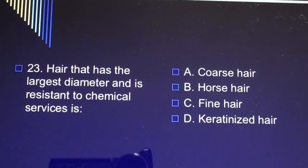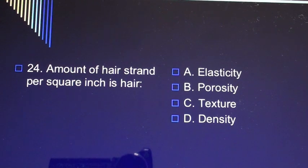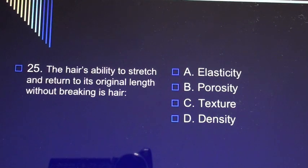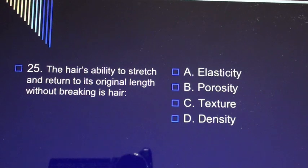Question 23: Hair that has the largest diameter and is resistant to chemical services is A) coarse hair, B) horse hair, C) fine hair, D) keratinized hair. Question 24: Amount of hair strands per square inch is hair A) elasticity, B) porosity, C) texture, D) density. Question 25: The hair's ability to stretch and return to its original length without breaking is hair A) elasticity, B) porosity, C) texture, D) density.